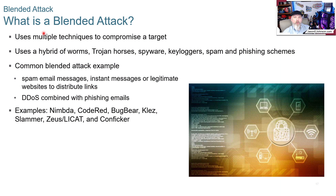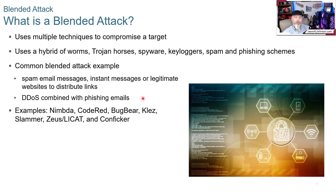A blended attack uses multiple techniques to compromise a target — hybrids of worms, Trojan horses, key loggers, spam, and phishing schemes. A common blended attack might use spam email, instant messages, or legitimate websites to distribute malicious links, combined with a simultaneous denial of service. The DoS creates panic so you can't check properly, and then attackers call saying your network is down and they're here to fix it — putting you under pressure to make mistakes. Examples include Code Red, Conficker, Zeus, and Slammer.